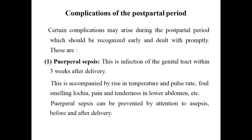Puerperal sepsis is infection of the genital tract within three weeks after delivery. Symptoms include rising temperature, tachycardia (increased pulse rate), and foul-smelling lochia — which is the discharge from the genital tract that begins right after delivery and may last up to three weeks or more. Signs include tenderness in the lower abdomen.